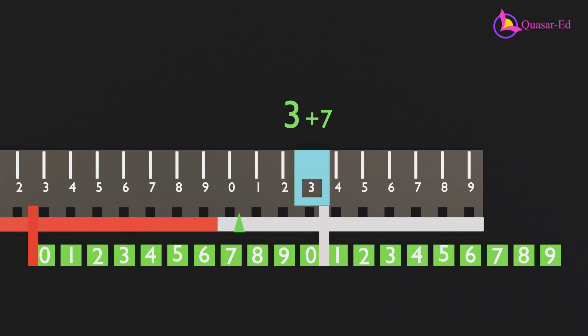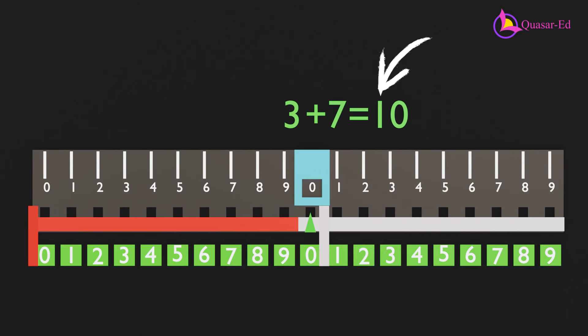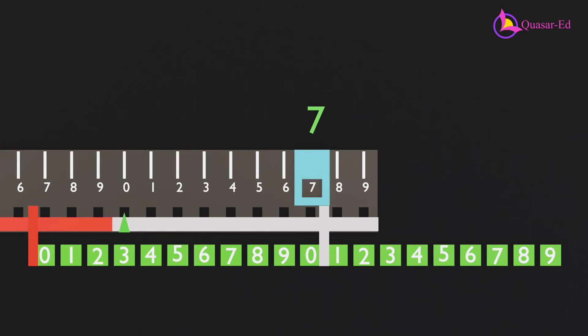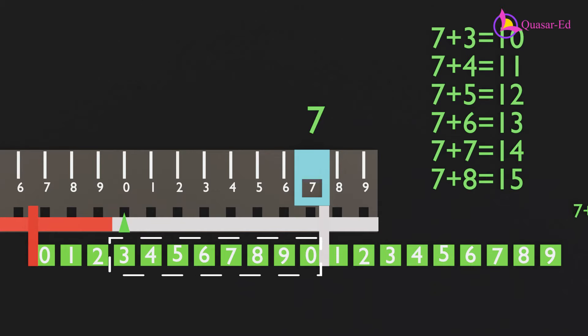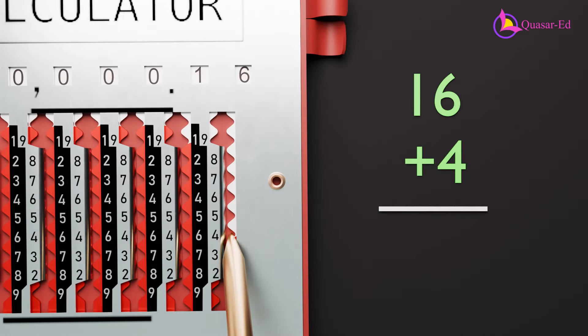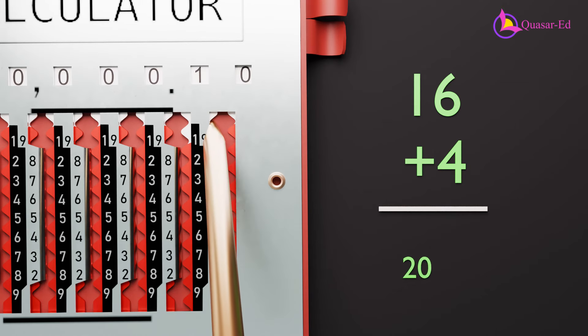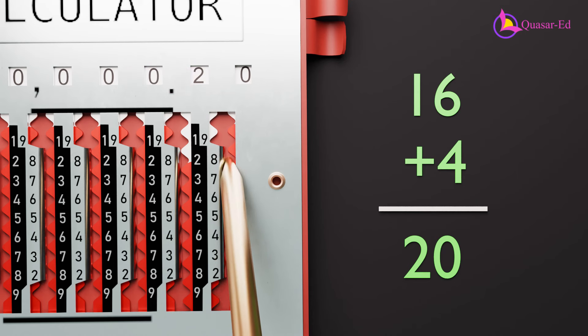Every time the white section moves right, it indicates a carry. For instance, if the ruler is at 7, all numbers aligned with the white section add up to 10 or more. In the Magic Brain calculator, when numbers in the white section move up, the stylus shifts left and pulls down the left column to add the carry. This principle underlies many mechanical adders.